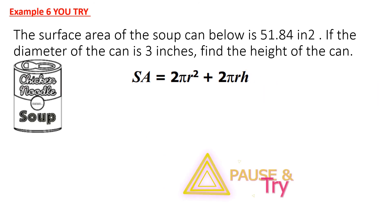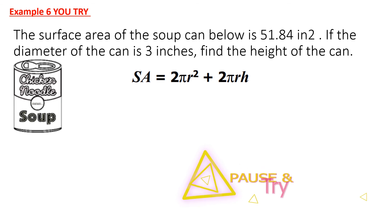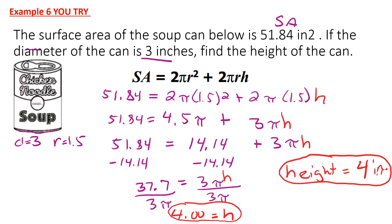Go ahead and pause the video and try the next word problem on your own. You should have gotten 4 inches for the height. Whether you multiply pi through early or toward the end, you get the same answer of 4 inches. Pause the video and analyze the work if you didn't get it correct.